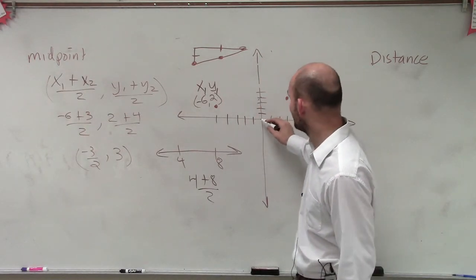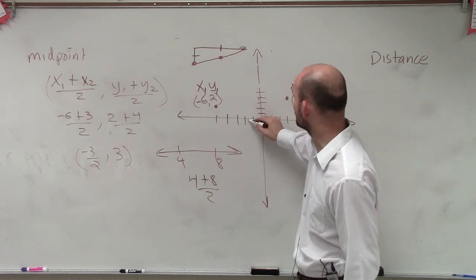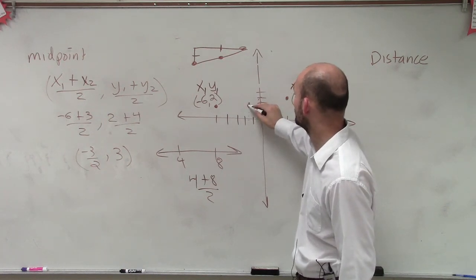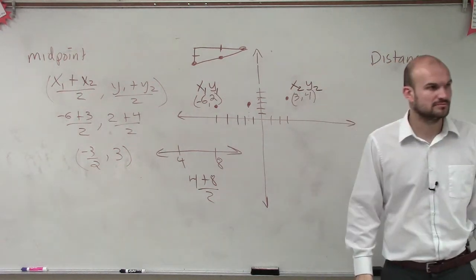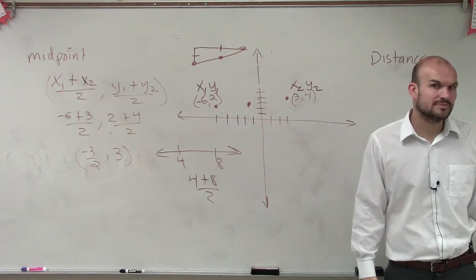So the midpoint is at negative 3 halves, which is 1.5, up 3, 1, 2, 3. Does that look like that's in the middle on my rough sketch? Not too bad, right?